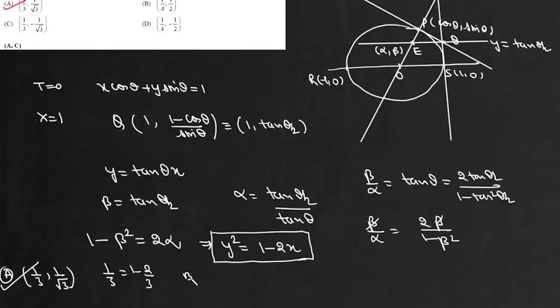Now for this option B, we have (1/4, 1/2). So this is 1/4 and this is 1 - 1/2, not equal. So this option B is incorrect.